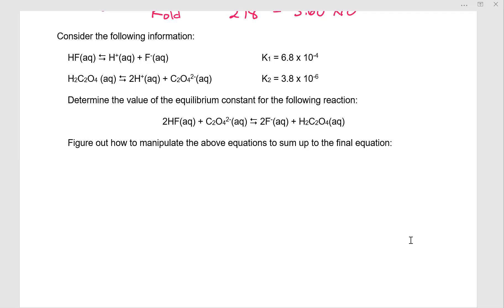We're asked to determine the value of the equilibrium constant for the reaction here. We're going to treat these like Hess's law. So we figure out how to manipulate the above equations to sum up to the final equation. So we know we need to have HF on the reactant side and we need to have two moles of HF. So let me multiply this one times two and I'm running in the forward direction. So that means that I'm going to use K1 squared.